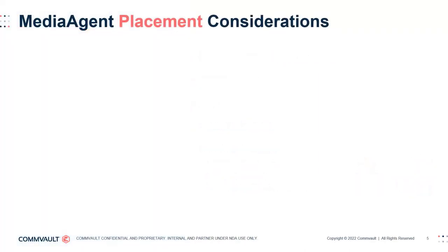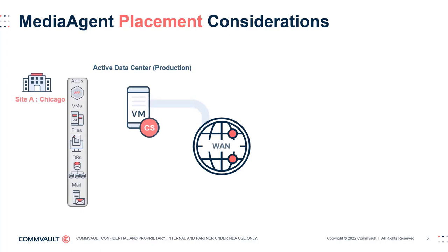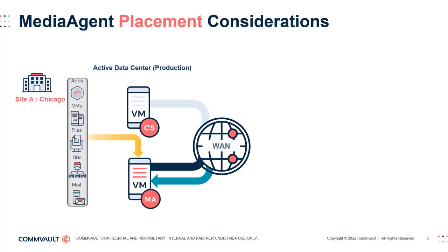Media agent placement is key to delivering a successful solution and is answered by asking a single question: where are we writing the data to? There is more to it when we factor in scale, resiliency, and security, but in its simplest form, anywhere you need to write a local copy of data will require at least one media agent. In this example, our customer would require at least one media agent in their active production data center located in Chicago for local backup copies.